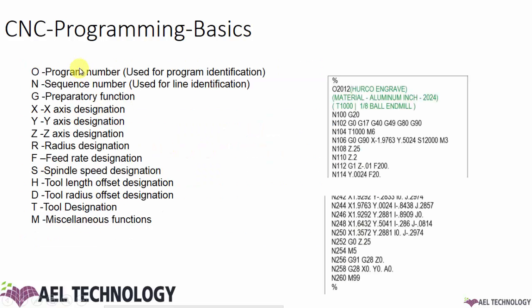Here are a few of the alphabets that represent each program element: O represents the program number, N for sequence number, G for proprietary functions, X/Y/Z for axis designations, R for radius designation, F for feed rate designation, S for spindle speed, H for tool length offset, D for tool radius offset, T for tool designation, and M for miscellaneous function.